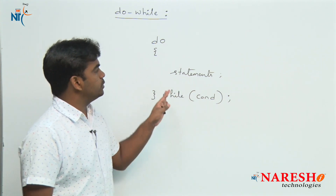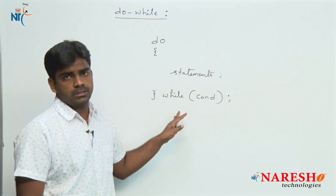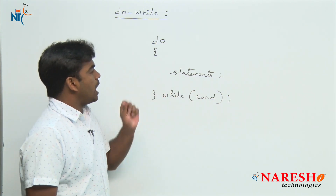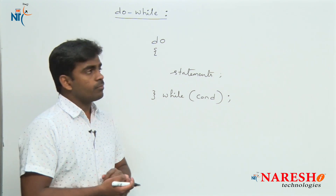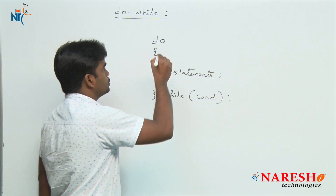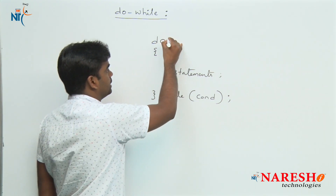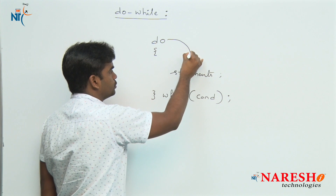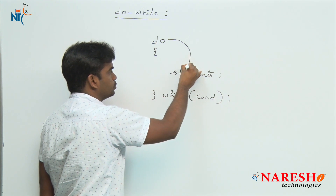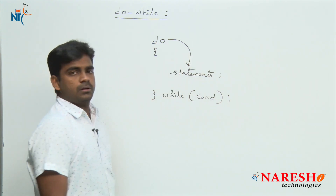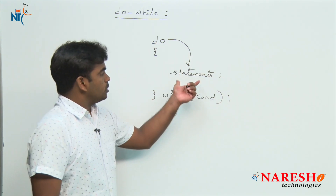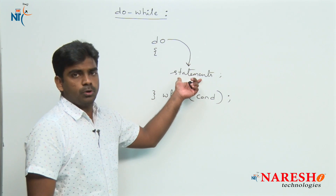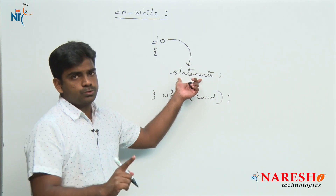This is the do-while loop execution flow — how it executes. Directly, without checking the condition, control enters into the loop and all the statements defined inside that block execute once.